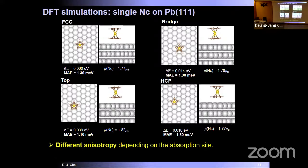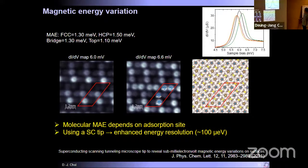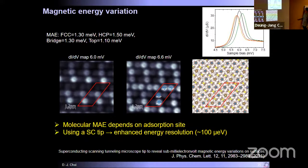DFT calculations for single nickelocene molecules at different adsorption sites — FCC, bridge, top, and HCP — gave different magnetic anisotropy energies for each site. We found a 0.4 meV magnetic anisotropy energy difference between the top and HCP sites. Comparing DFT calculations with experimental data, we determined the unit cell structure composed of three standing dimer molecules plus three laying-down dimer nickelocene molecules. Thanks to the immense energy resolution of the superconducting tip, we could address these magnetic energy variations depending on the adsorption site of the nickelocene molecule.